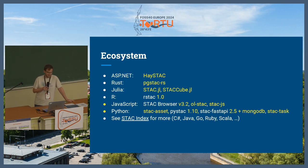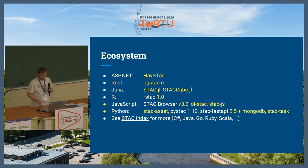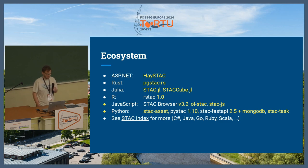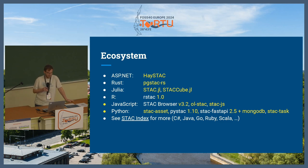There are various new tools in the ecosystem. There is now a STAC tool for ASP.NET. There is a new Rust client similar to pystac — pystac-rs. There are Julia-based clients for the growing Julia community: stac.jl and stackcube.jl. Oarstac, which was previously an API client only, is now available in version 1.0 and can read and create static STAC catalogs as well.